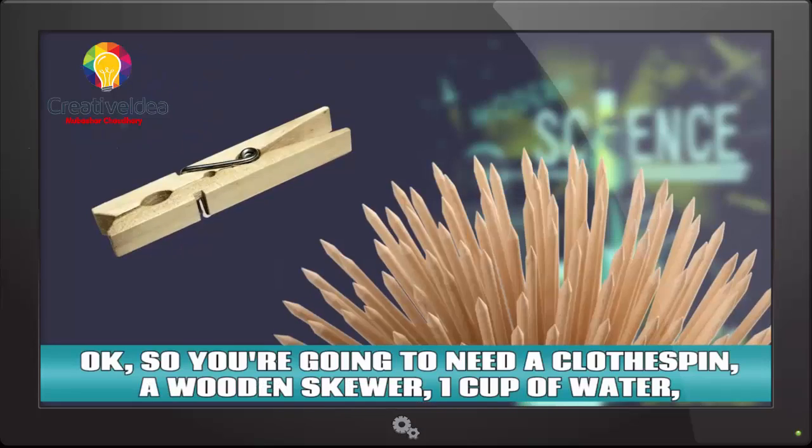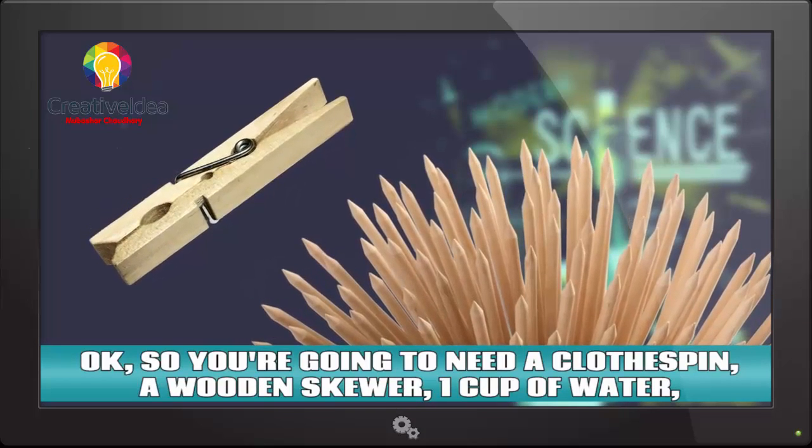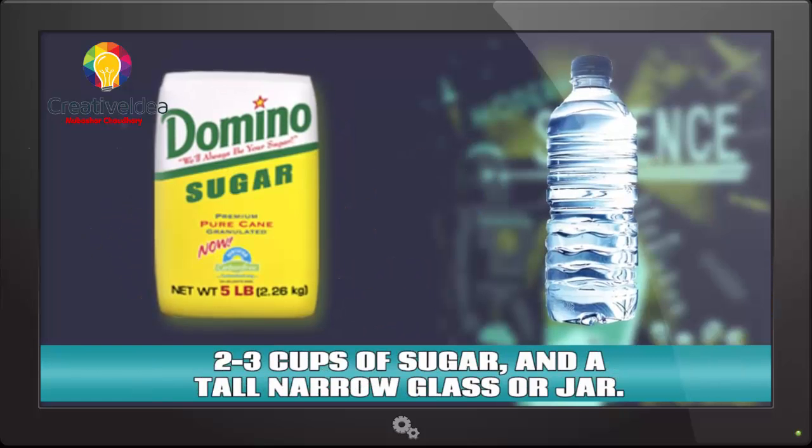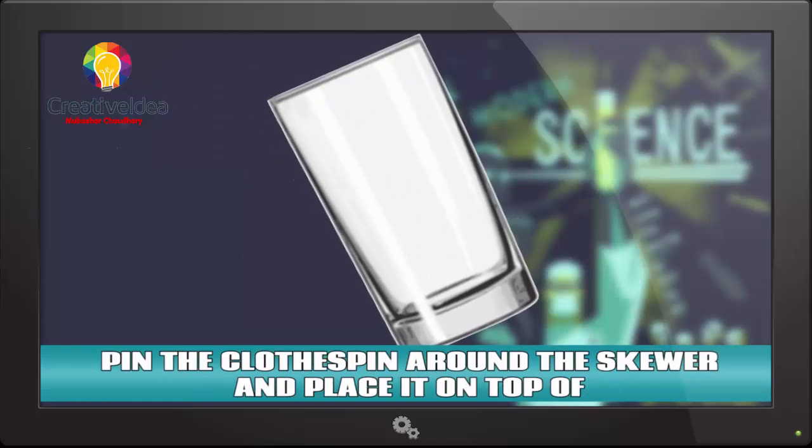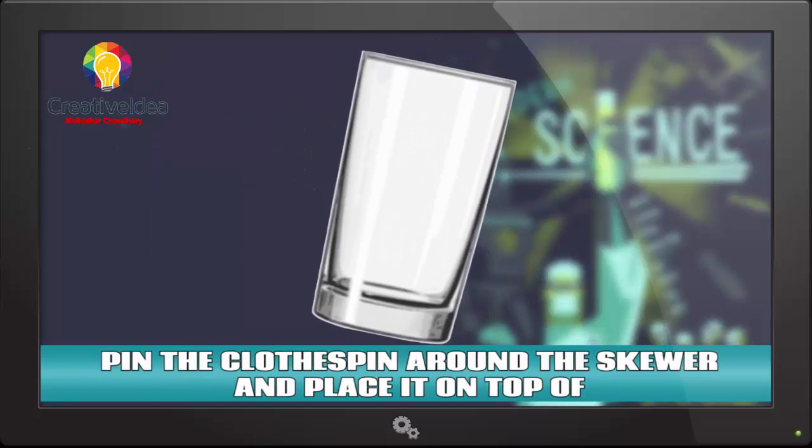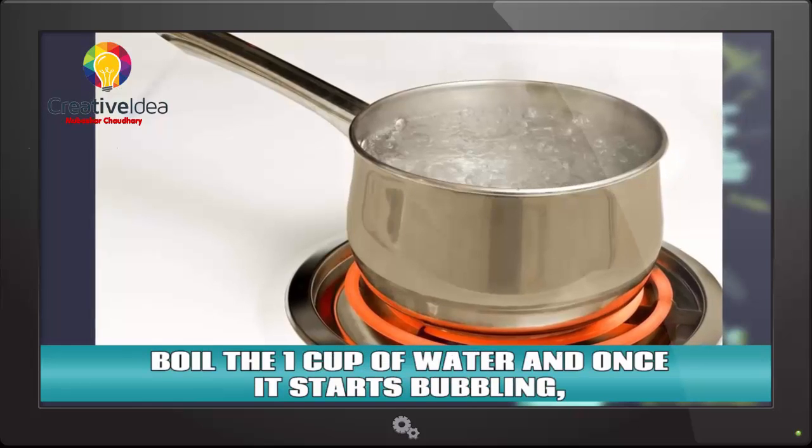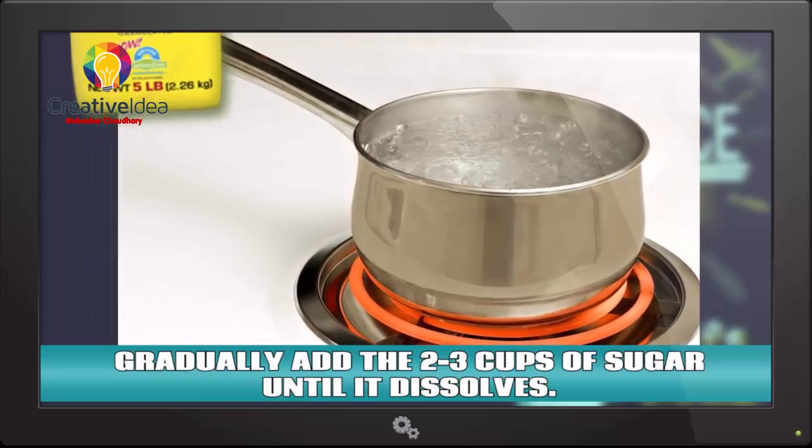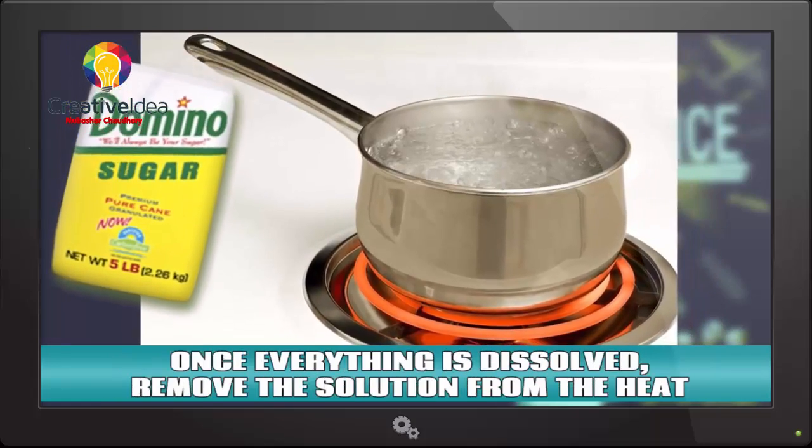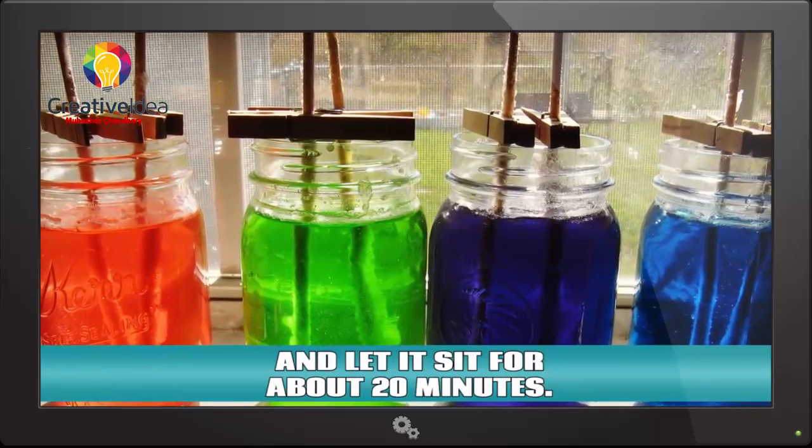Rock candy. You're going to need a clothespin, a wooden skewer, a cup of water, two to three cups of sugar, and a tall narrow glass or jar. Pin the clothespin around the skewer and place it on top of the glass to make sure it fits. Boil the one cup of water and once it starts bubbling, gradually add two to three cups of sugar until it dissolves. Once everything is dissolved, remove the solution from the heat and let it sit for about 20 minutes.